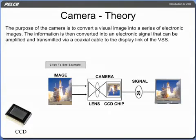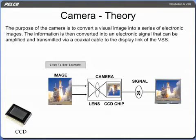A pixel, short for picture element, is the basic unit of a CCD chip that accumulates charge depending upon the amount of light falling upon it. A typical CCD chip has over 300,000 pixels. The pixels are so close together that they appear connected.